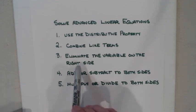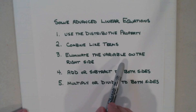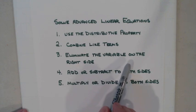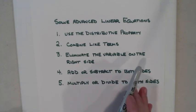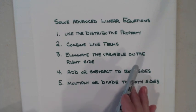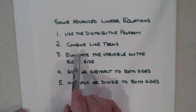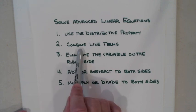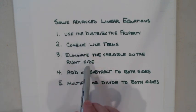The next thing you need to look for is if there is a variable on the right side — you need to eliminate that variable. If there's not a variable on the right side, don't worry about it. And if there are no like terms that combine together, you don't need to worry about that either — just skip those steps.